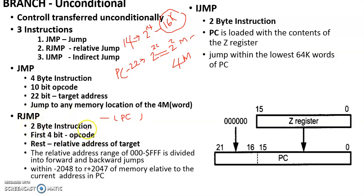RJMP is a 2-byte instruction with a 12-bit offset field in the instruction.